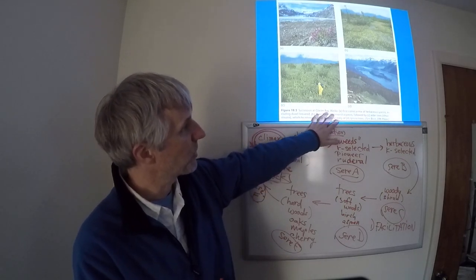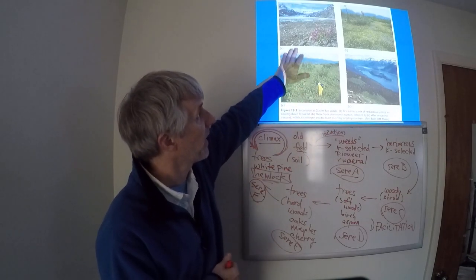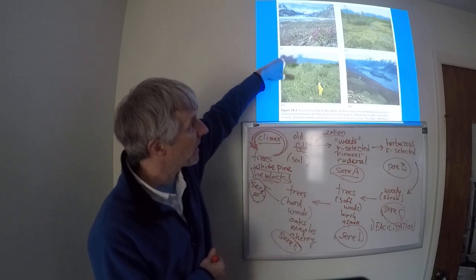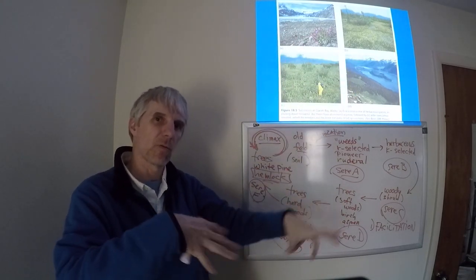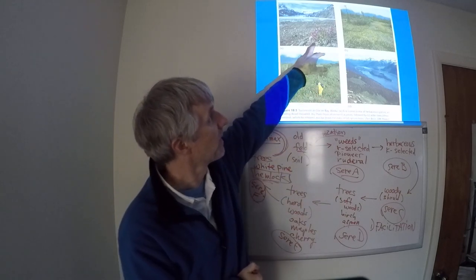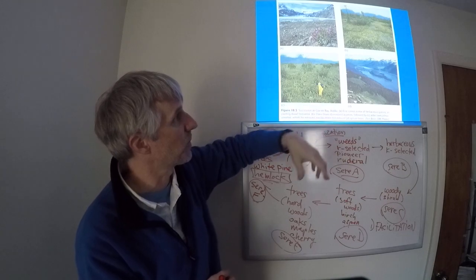Here in Glacier Bay, Alaska, we would see a similar kind of thing. The glacier recedes, there's all this soil left behind where the glacier pounded all the rocks down into little pieces, and you get these pioneer species, these early successional species.